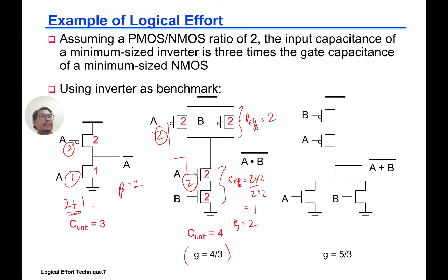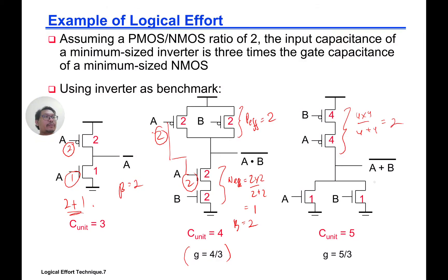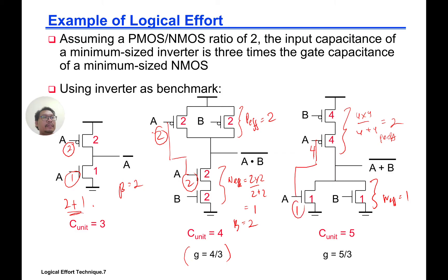For the NOR gate, with 4 times 4 over (4 plus 4) equals 2 for P_effective, and N_effective equals 1, we have a 2-to-1 ratio. However, for input A the sizes are 4 and 1, so C_unit equals 5 and G equals 5/3. This confirms that the NOR gate requires more logical effort than the NAND gate.